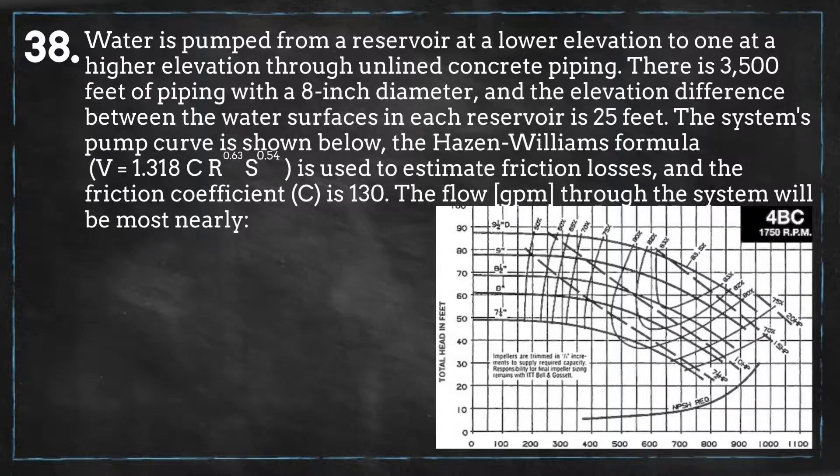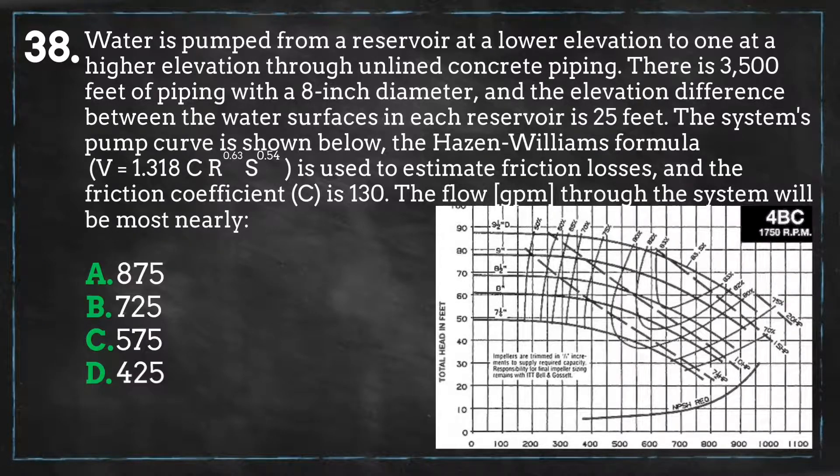The system's pump curve is shown below. The Hazen-Williams formula is used to estimate friction losses and the friction coefficient is 130. The flow through the system will be most nearly: a) 875, b) 725, c) 575, or d) 425.